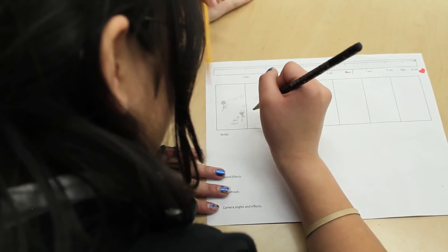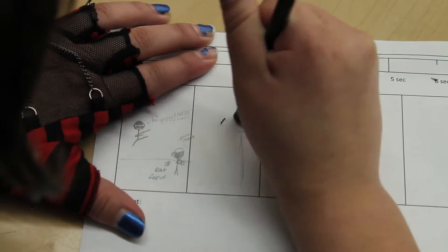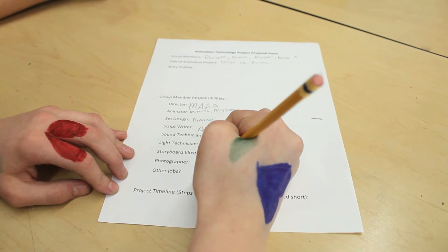In their teams, they have to create a storyboard and they have to make a proposal for their video. So they have to work together. They have to decide whose job certain things are: who's taking the pictures, who's in the video, who's moving the objects in the video, who's the director of the video. So they really have to work as a cohesive group for this to really work well.